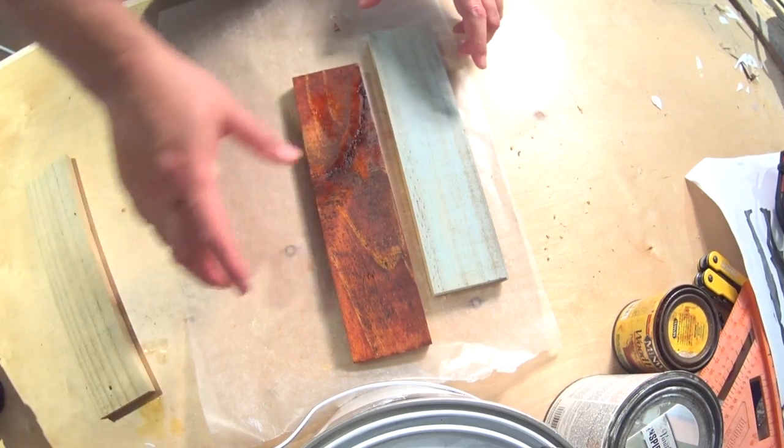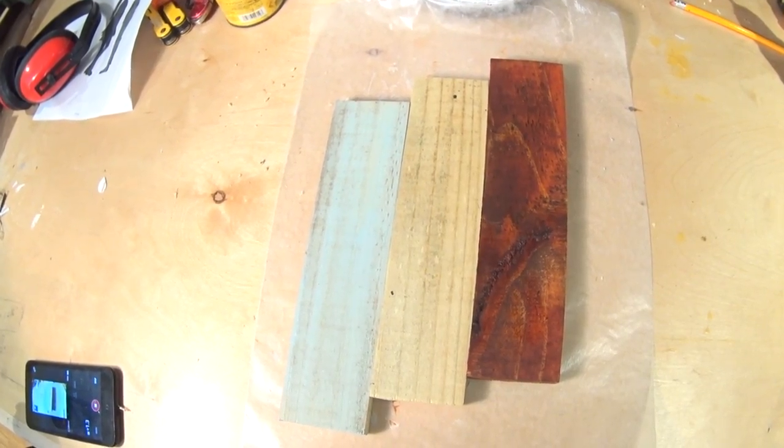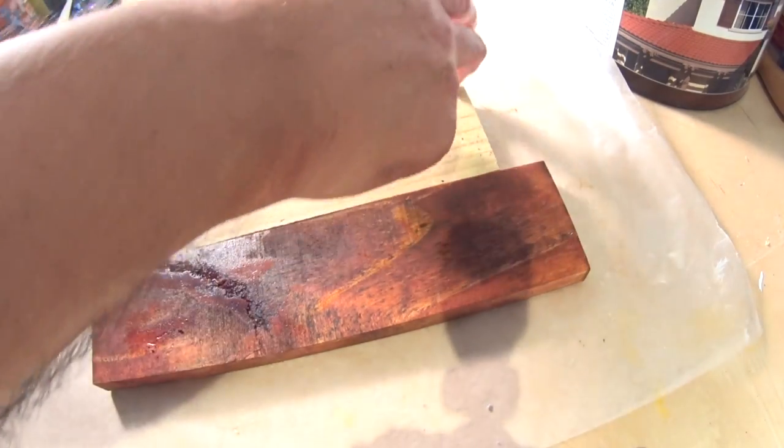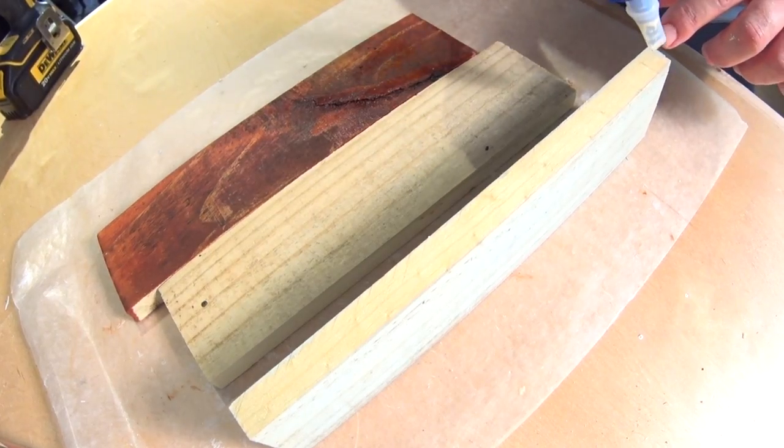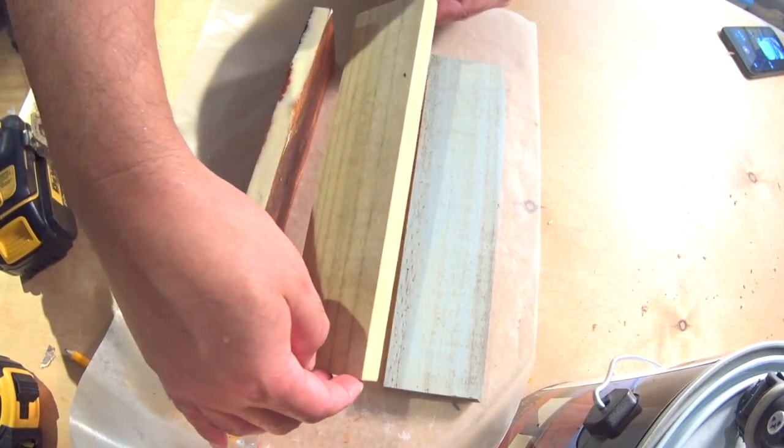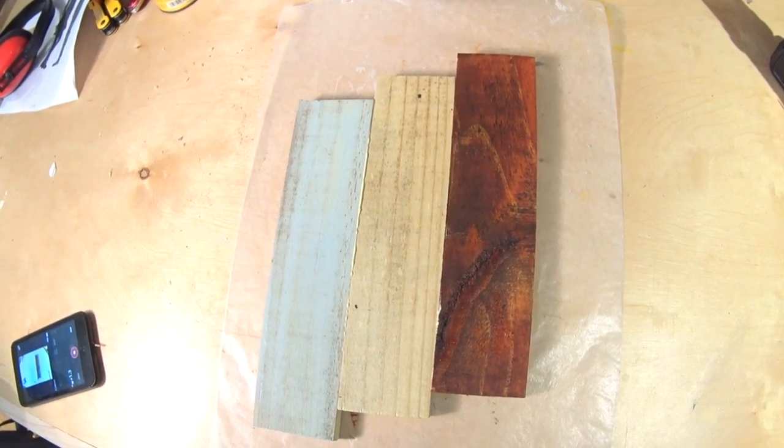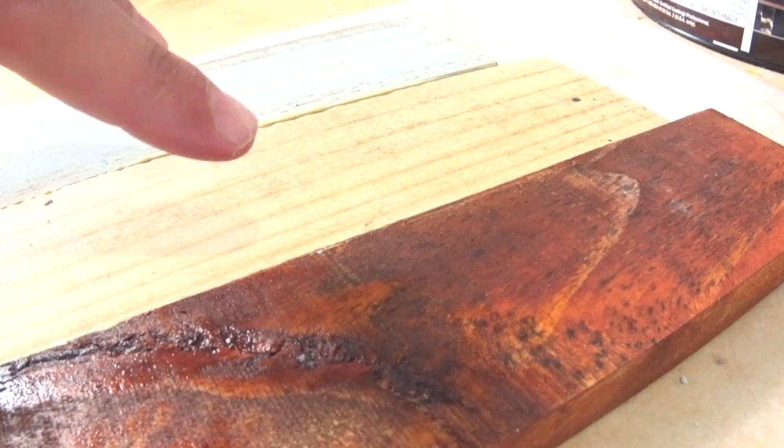We've got our three pieces and we'll stagger them like so. Now, let's go ahead and glue these up and we've got the wax paper below so that this won't stick to the bench. Place these down wherever the staggering is going to occur. I think that'll do it. We'll just let this dry now.